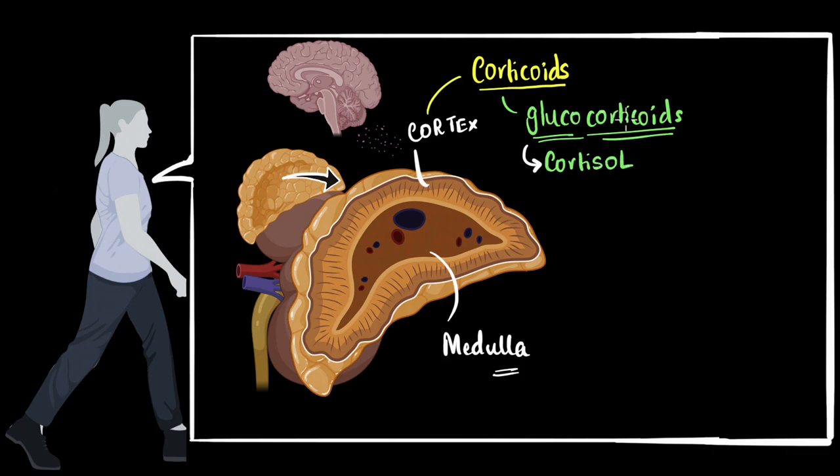So cortisol is a glucocorticoid, which means its job is, at least its primary job, is to try and give your body glucose. But not from glycogen, from other non-carbohydrate sources. So we give a name to that process of getting glucose from non-carbohydrate sources. It's called gluconeogenesis. Gluconeogenesis means synthesis of glucose and neo means from new sources, from non-carbohydrate sources. For example, it does it by breaking down proteins.